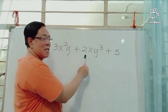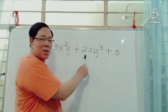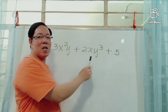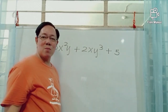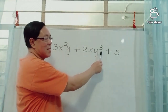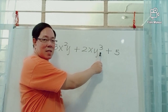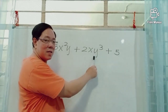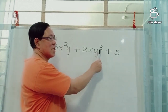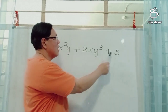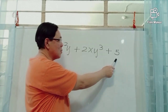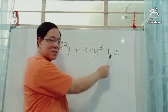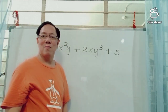Similarly, in the second term, between 2, x, and y cubed, we have the operation multiplication. The exponent 3 indicates that y is multiplied by itself three times. The last term has no variable or letter, so the last term is called a constant term.